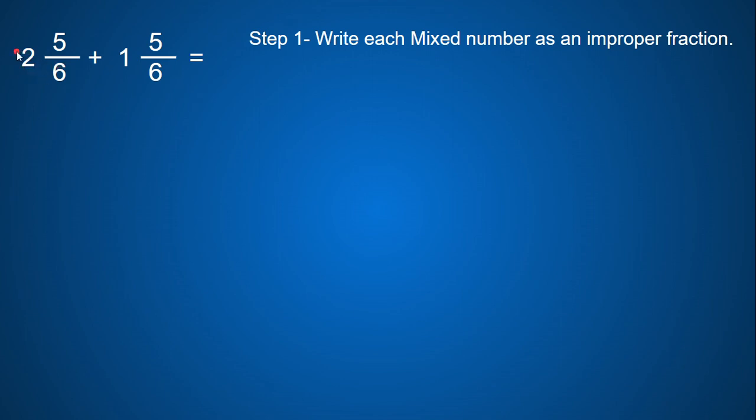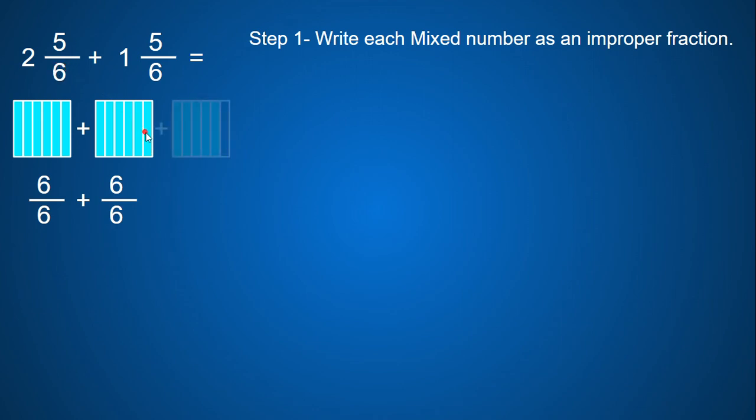So I have two wholes right here. I need to realize that each whole is worth six sixths. So here's one whole that's worth six sixths, and then I need one more whole that is six sixths. And then I'm going to add my five sixths onto those two wholes. So six sixths plus six sixths plus five sixths will give me seventeen sixths.